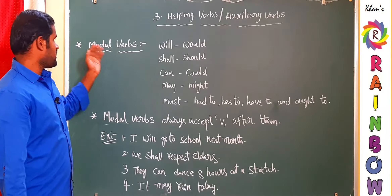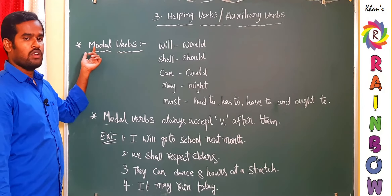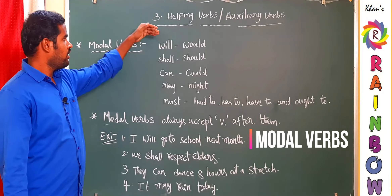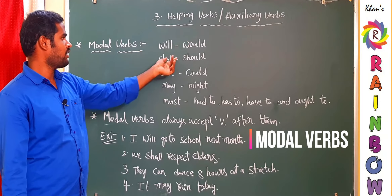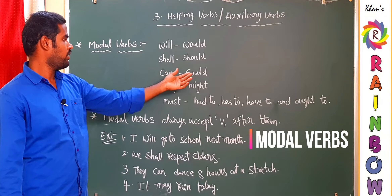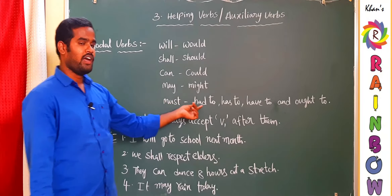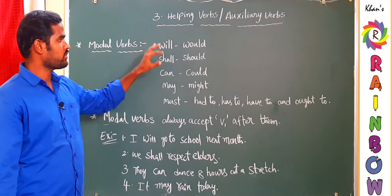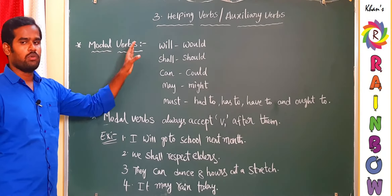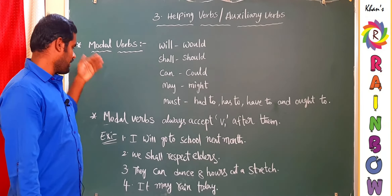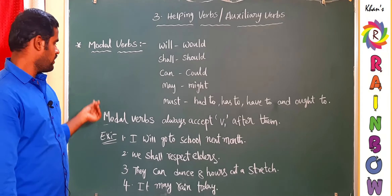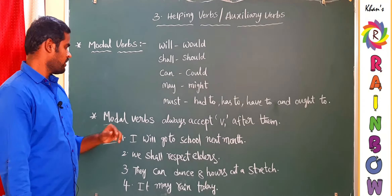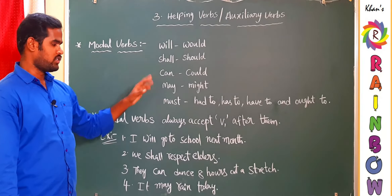The last type of helping verbs is modal verbs. There are pairs of modal verbs: will and its past form would, shall and should, can and could, may and might, must, had to, has to, have to, and ought to. All these verbs together are known as modal verbs. The important rule: modal verbs always accept V1 after them.